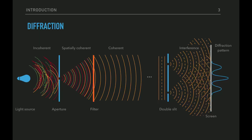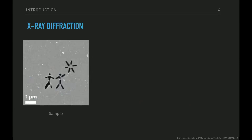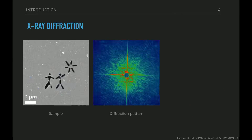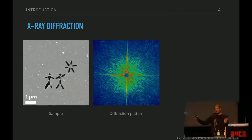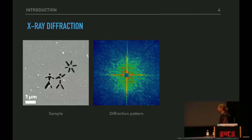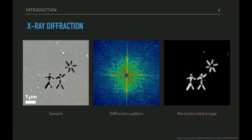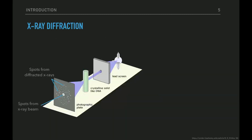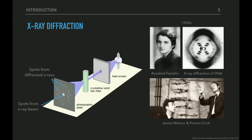In our case we do X-ray diffraction, so instead of double slits we have electrons on which photons get scattered. Here is a microscopic image from a sample hit by an X-ray laser pulse, and this is the diffraction pattern recorded at the detector. From the diffraction pattern you can calculate the reconstructed image — these two are mathematically equivalent. These X-ray diffraction images have been carried out for decades. Most famously, the discovery of the DNA structure was only possible because Rosalind Franklin made diffraction images of a DNA crystal. Guess who got the Nobel Prize for this? Of course, the two white men.